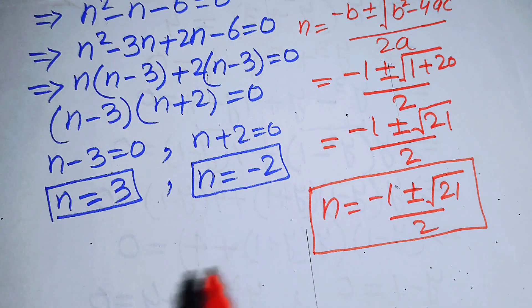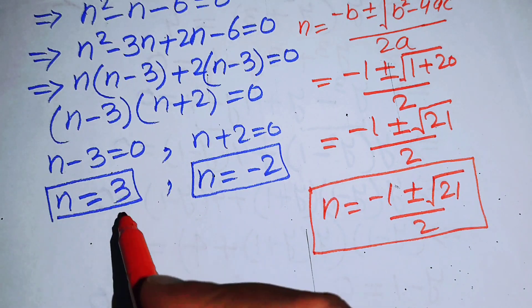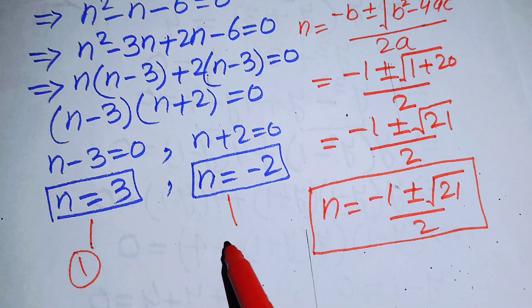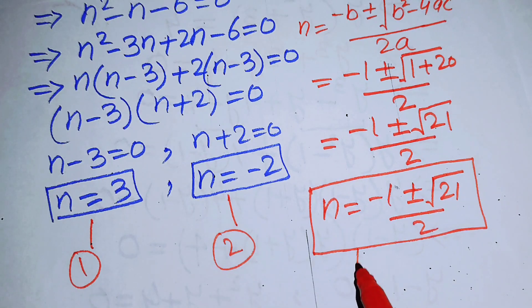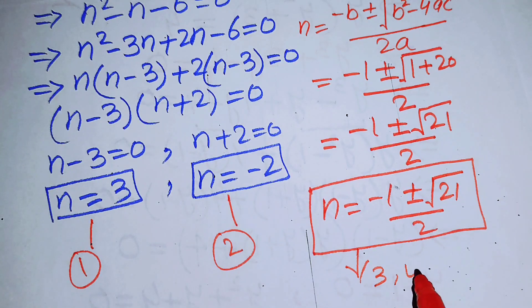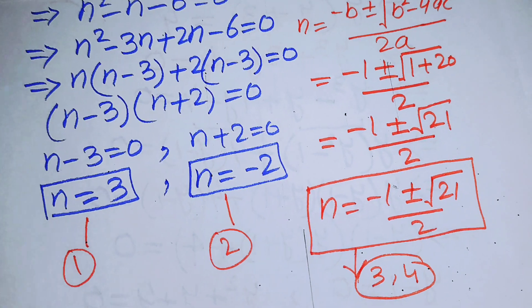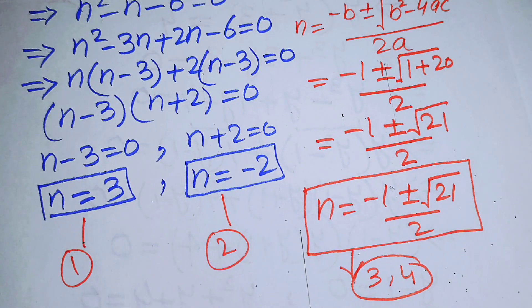So these are the four solutions of this problem: n = 3, n = -2, n = (-1 + √21)/2, and n = (-1 - √21)/2. Thank you so much for watching this video. Please subscribe to my channel for more exciting videos.